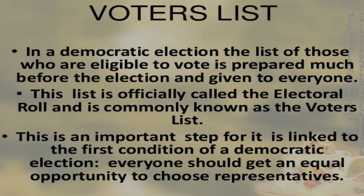Now let us talk about the voter list. In a democratic election, the list of those who are eligible to cast a vote is prepared much before the election and given to everyone. This list is officially called the electoral roll or voter list. This is an important step as it is linked to the first condition of a democratic election: everyone should get an equal opportunity to choose their representatives.